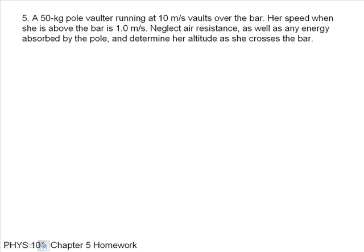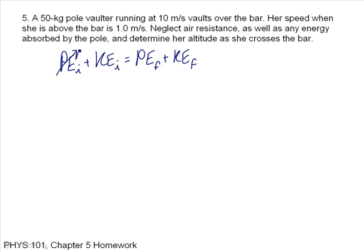A 50-kilogram pole vaulter running at 10 meters per second vaults over the bar. Her speed when above the bar is 1 meter per second. Neglecting air resistance and any energy absorbed by the pole, determine her altitude as she crosses the bar. Initially she's at the ground, so h equals zero and potential energy is zero. At the top she has both height and speed, so she has both potential and kinetic energy.